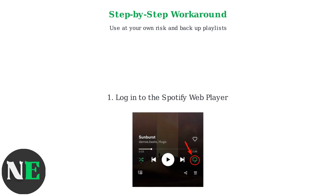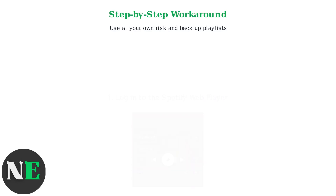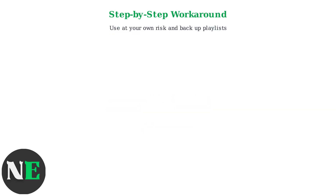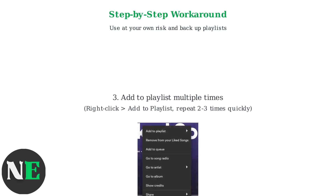Step one: log into the Spotify web player on your desktop browser. Step two: find the song you want to duplicate and copy its Spotify URI by right-clicking the song, selecting Share, and choosing Copy Song Link.